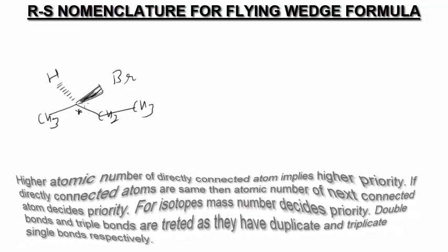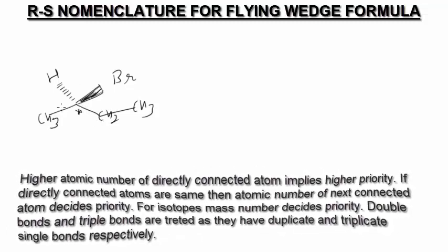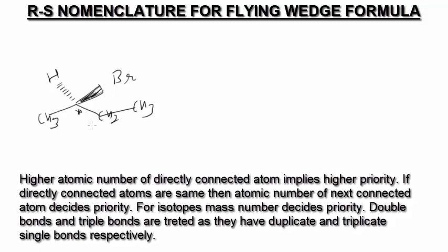Now to find RS configuration, we have to assign priority to these groups. Priorities are given on the basis of the atomic number of the atom directly connected to the chiral carbon. Here you can see Br is connected, here carbon, here carbon, here hydrogen. So Br will be given first priority, and carbon will have higher priority than hydrogen. So hydrogen by default will become the fourth priority group.